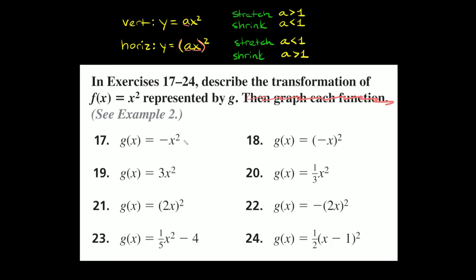Problem 17: g of x equals negative x squared. We have a negative sign out in front with no parentheses, so this means the parabola is simply being reflected over the x-axis. Problem 18: g of x equals negative x, in parentheses, squared. We have the negative sign inside the parentheses, so this one is being reflected across the y-axis.